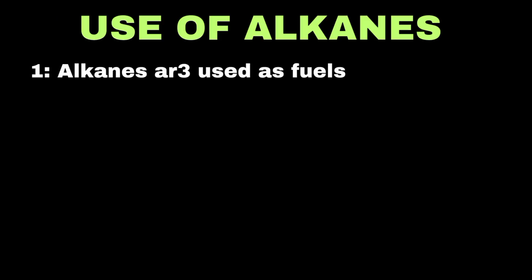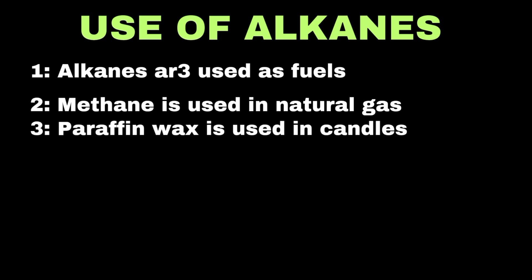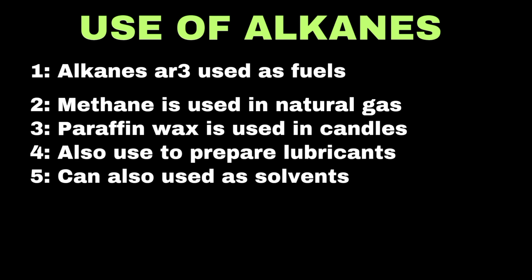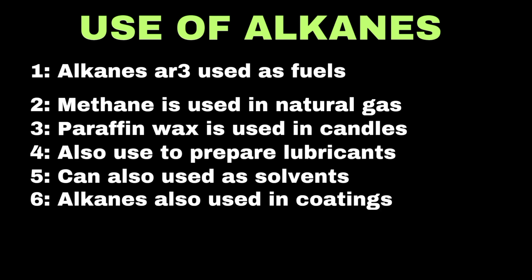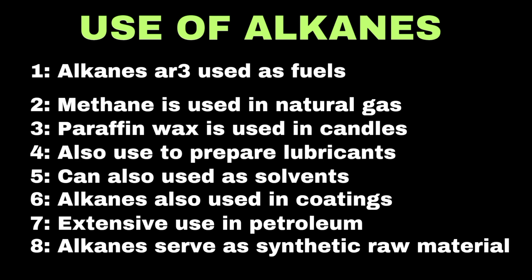Alkanes like methane, propane, and butane are used as fuels in homes, industries, and vehicles. Methane is used in natural gas for cooking and heating. Higher alkanes such as paraffin wax are used in making candles, polishes, and waterproof coatings, and also serve as lubricants. Alkanes like hexane and heptane are used as industrial solvents. They are the main components of crude oil, refined into petrol, diesel, and kerosene, and also serve as raw materials for making alcohols, plastics, and detergents.